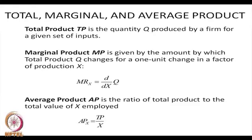Next is average product AP. APX is simply the ratio of total product to the value of a particular factor X employed. Similarly, if we have another input Y then APY equals total product TP divided by Y. So these are the three measures — total product, marginal product, and average product — that we shall use hereafter.